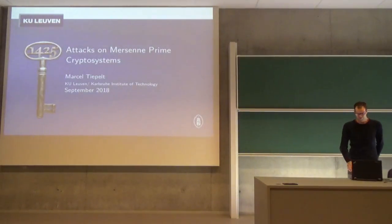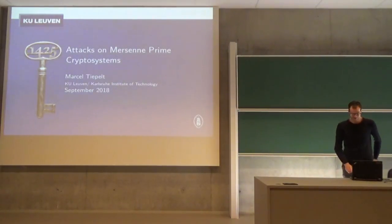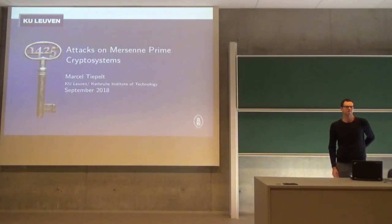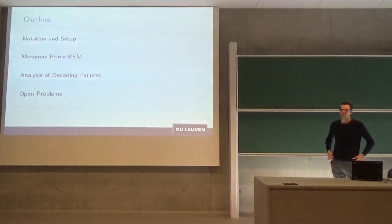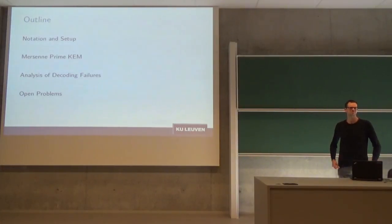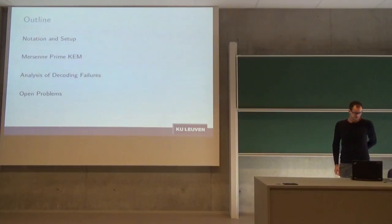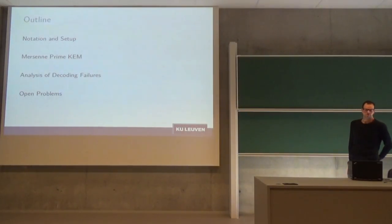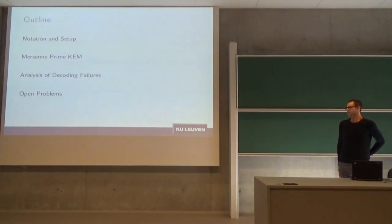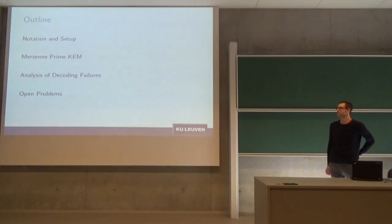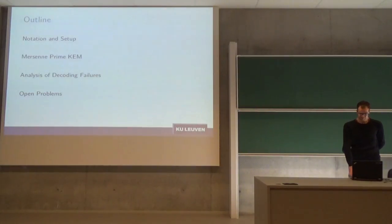I see people who already heard this are not here, which is good — I don't have to hear this again. To be more precise, it's not just a text, it's a text using decoding failures. I'm sure all of you were awake when Alan presented the Ramstake cryptosystem, but we'll have a little refresh. We'll look at the best currently known attack on Ramstake, then at decoding failures and how we can improve that attack, and conclude with some open problems.